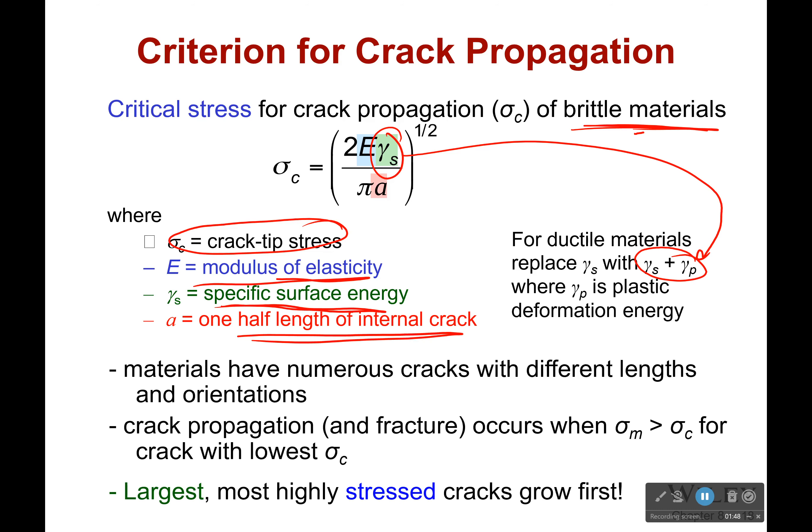Materials have a bunch of cracks in them — it's never just one crack. So which one is going to fail first, and also what orientation is going to fail first? Crack propagation and fracture are going to occur when that magnified stress exceeds the critical stress for the crack with the lowest critical stress. So the largest cracks or the most highly stressed cracks are going to grow first. Whichever one reaches this criterion first is going to begin to fail first.